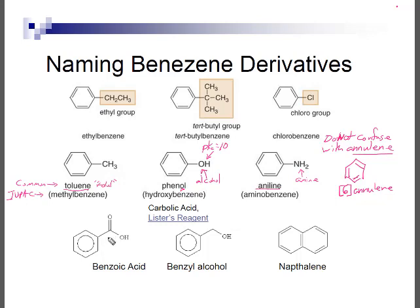Then we have benzoic acid — an acid functional group attached directly to the ring. And benzyl alcohol — notice the important difference from phenol: in phenol, the oxygen is directly attached to the ring, whereas in benzyl alcohol, there is a CH2 between the ring and the OH. As a result, benzyl alcohol has a pKa of about 16 because it is not conjugated to the ring system, whereas phenol is resonance-stabilized.